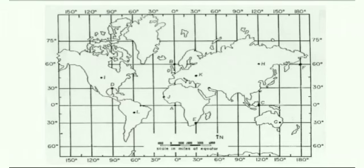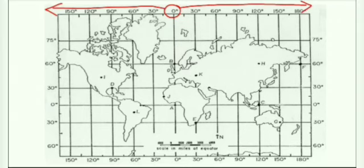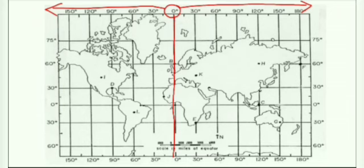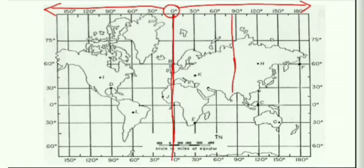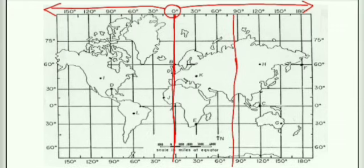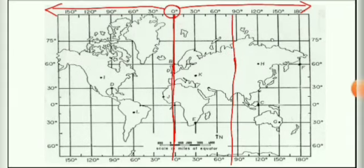Zero degrees longitude is the Prime Meridian, also known as Greenwich Mean Time. It is from here that we calculate longitudes and time. This line passes through a place named Greenwich in England, hence the name Greenwich Mean Time. Countries in the eastern direction are always ahead in time compared to Greenwich. Since 82.5 degrees east is our standard time meridian, and the earth takes 5 hours 30 minutes to travel that distance, India's standard time is ahead of Greenwich.